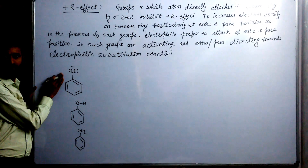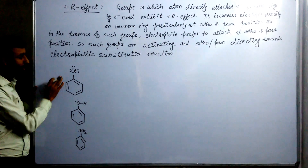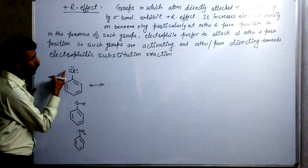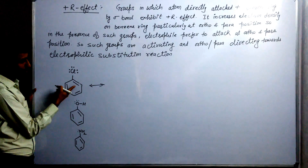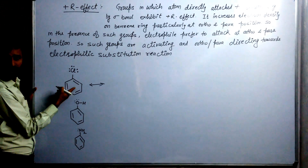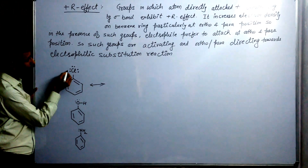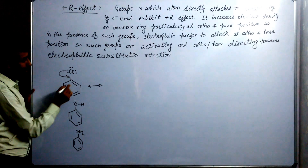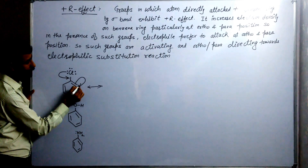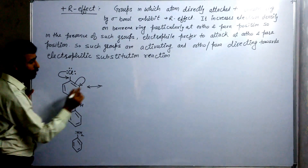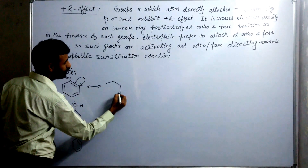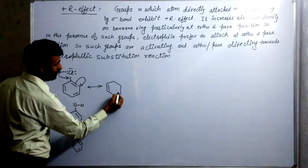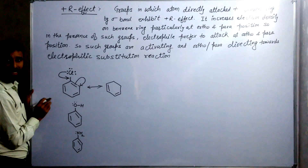Take the example of chlorobenzene. In chlorobenzene, you can see the lone pair and this pi bond — they are in conjugation. So the lone pair becomes a pi bond and the pi bond becomes a lone pair. In this way, the rest of the pi bonds remain as such.